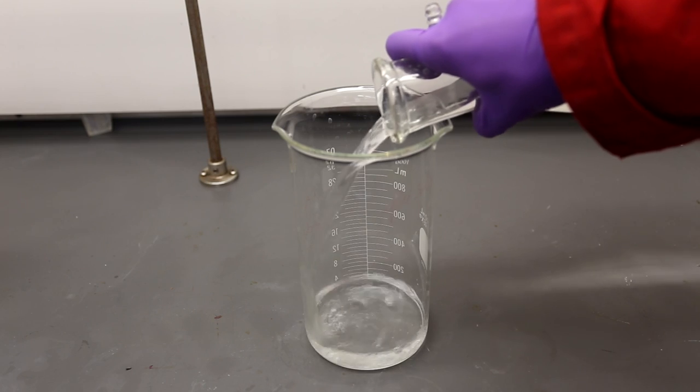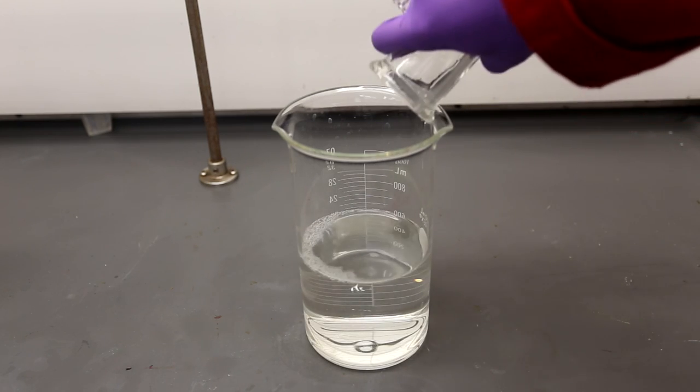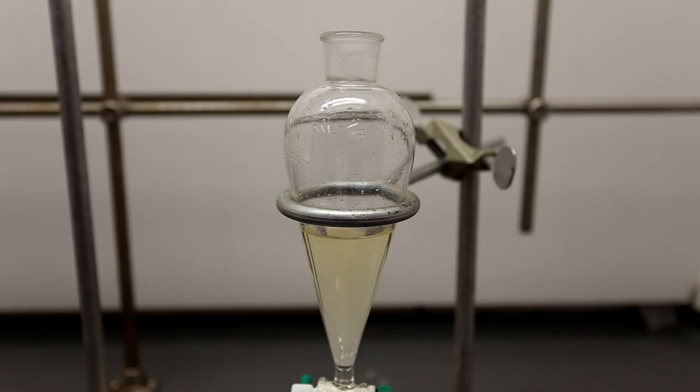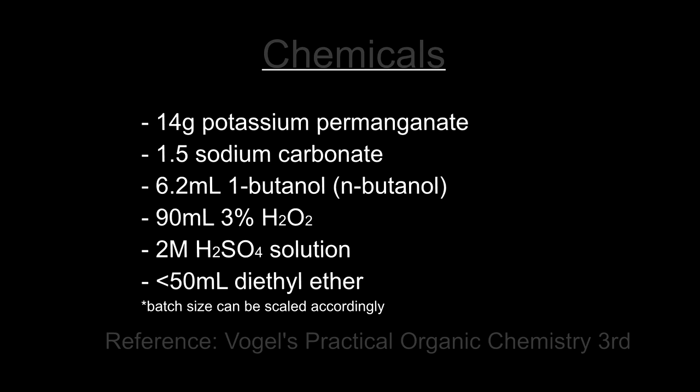In this video, we will be making butyric acid by the oxidation of 1-butanol using a solution of potassium permanganate. For this experiment, you're going to need 14 grams of potassium permanganate, 1.5 grams of sodium carbonate, 6.2 milliliters of 1-butanol, 90 milliliters of 3% hydrogen peroxide, 2 molar sulfuric acid solution, and less than 50 milliliters of diethyl ether.